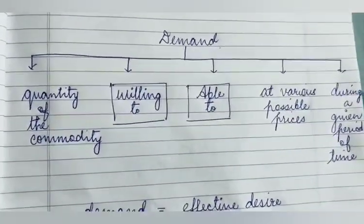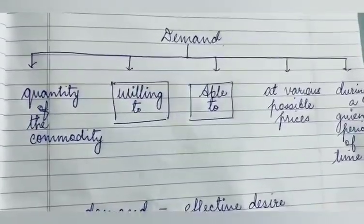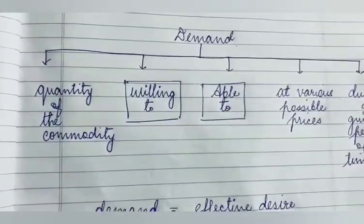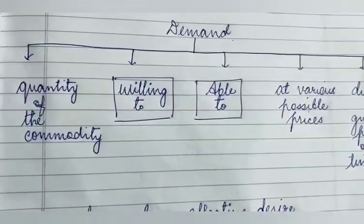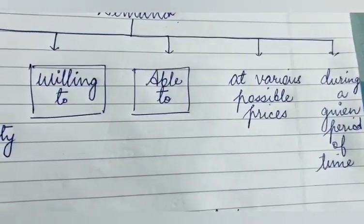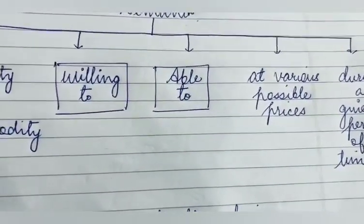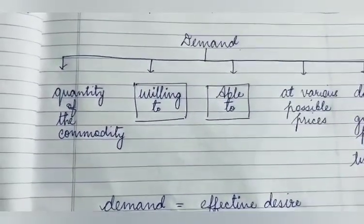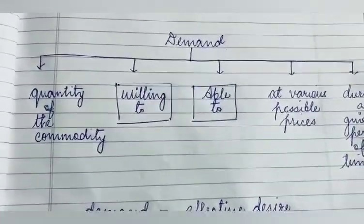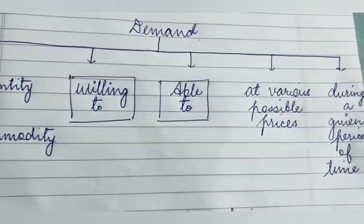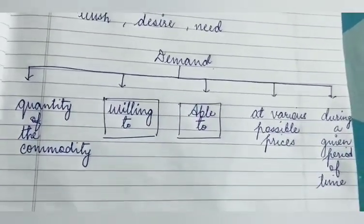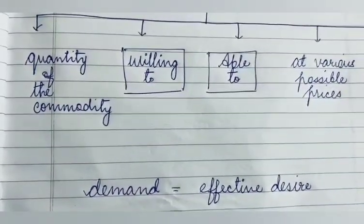So agar aap yeh paanch points yaad rakhein toh demand ka definition yahi hota hai — demand refers to the quantity of the commodity that the consumers are willing to and able to purchase at various possible prices during a given period of time. In short, hum bol sakte hain ki demand is equal to effective desire.